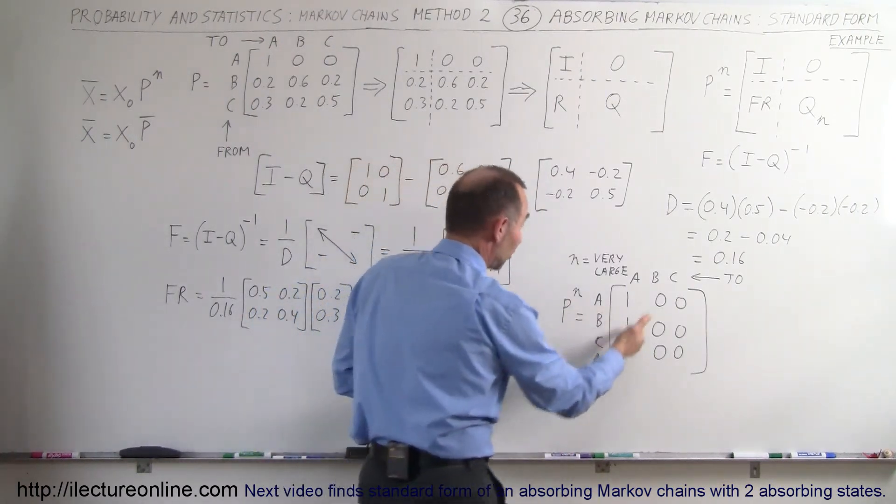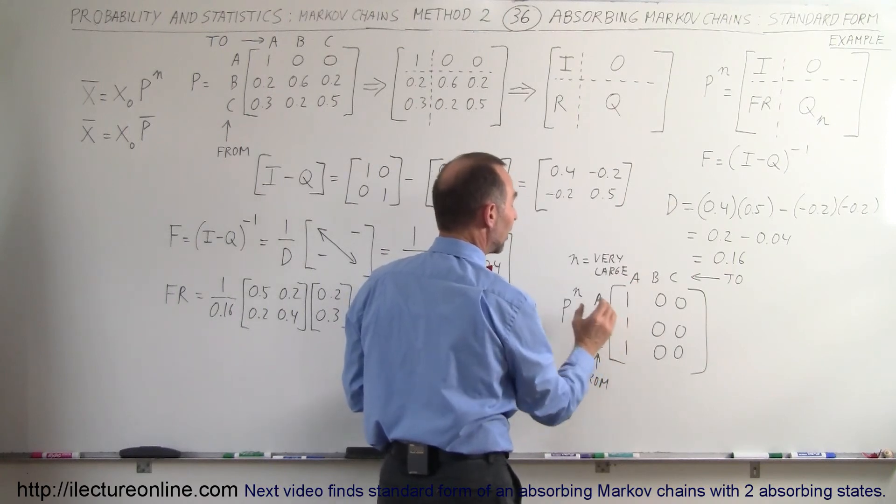And from C to A, 100% of the C customers will go to A but again C will have no customers so therefore none of customers will go to A because there aren't any.